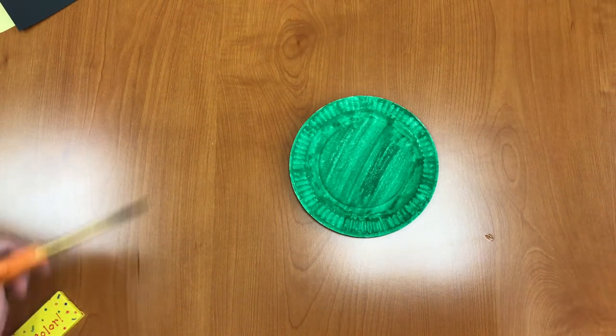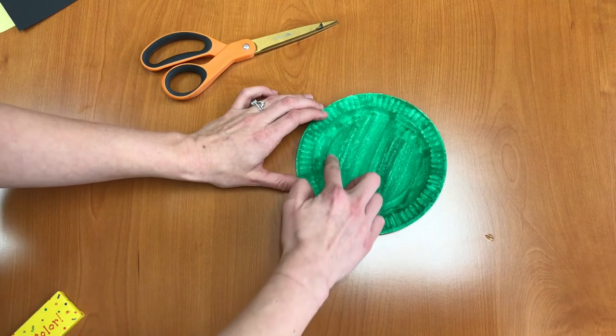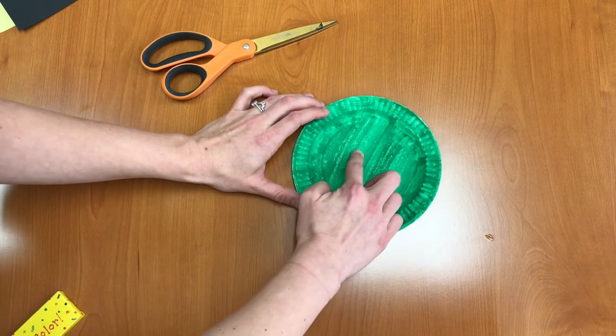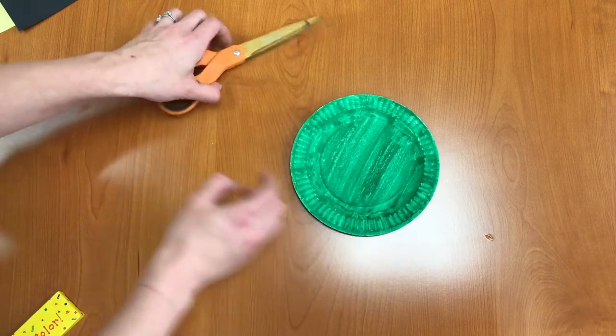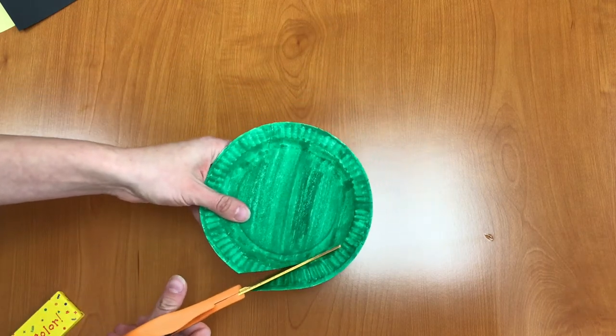Next what you want to do is cut a spiral into your twirler. You can draw it first if you want to but I'm just going to go ahead starting here, I'm just going to cut the spiral.